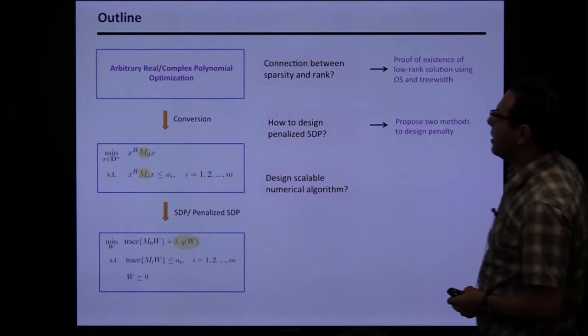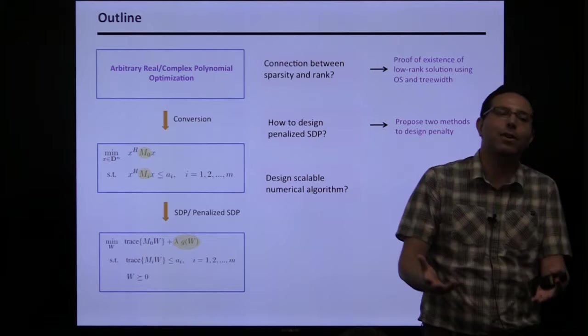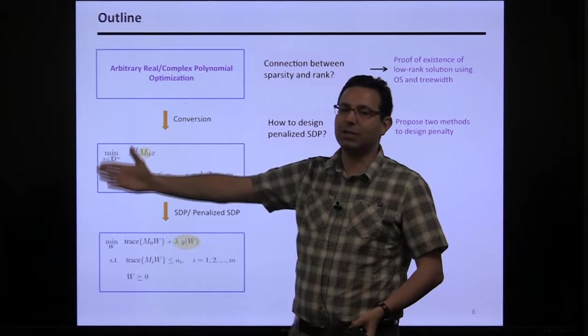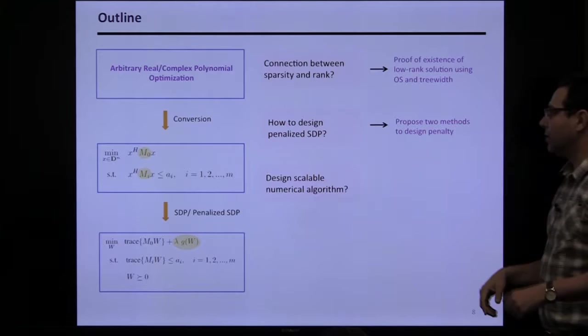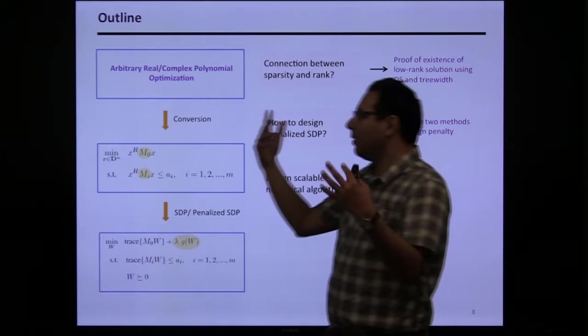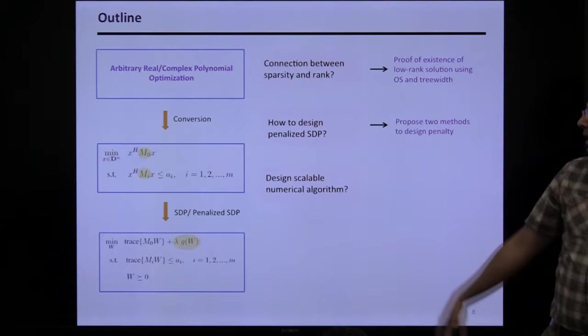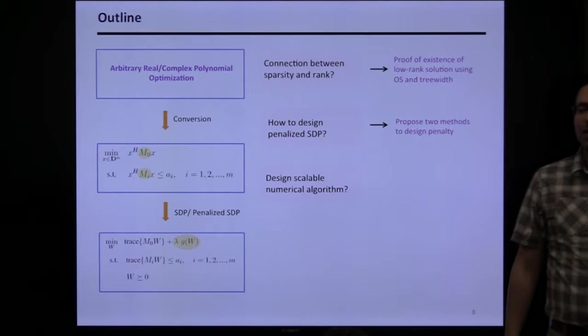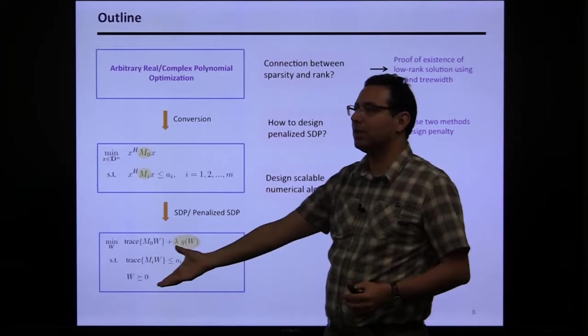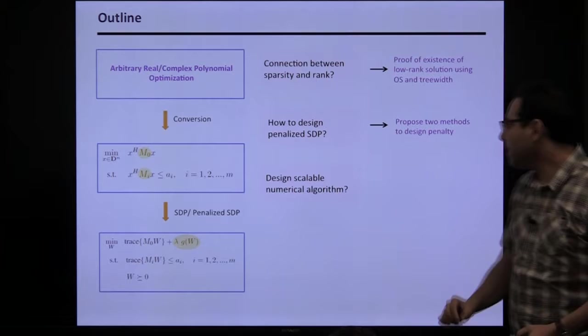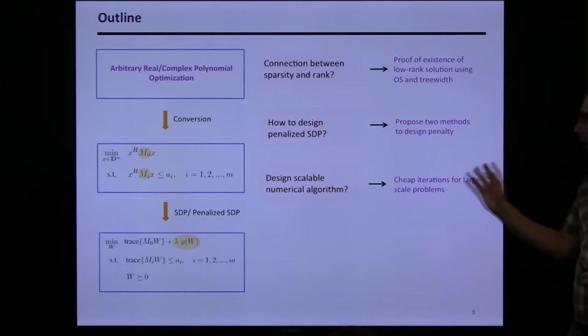Another challenge is the curse of dimensionality — going from n variables to n² variables. Even though n² is polynomial time, if n is one million, n² is enormous. You can't use gradient, Newton's, or interior-point methods. For example, if x has 10,000 variables and you solve using state-of-the-art SDP solvers, it takes more than two years just counting the number of flops. The complexity of solving SDP is O(n⁶), and when n is 10,000, that's extremely hard.